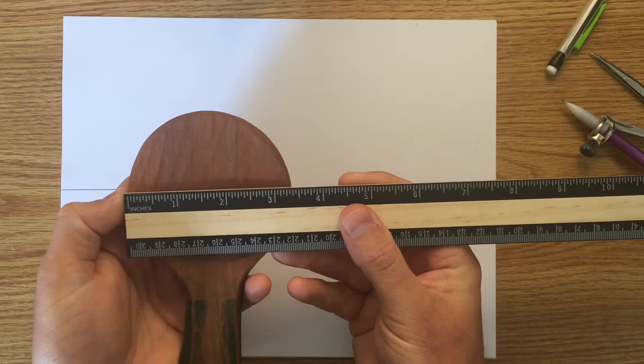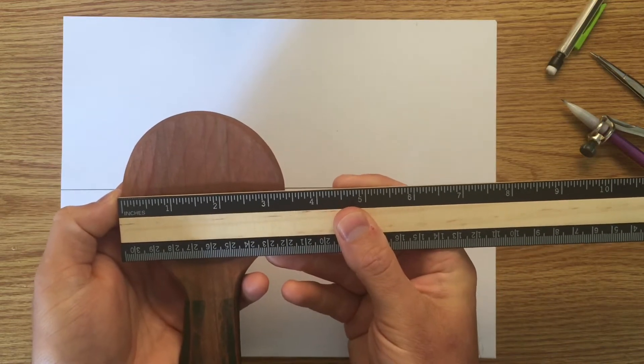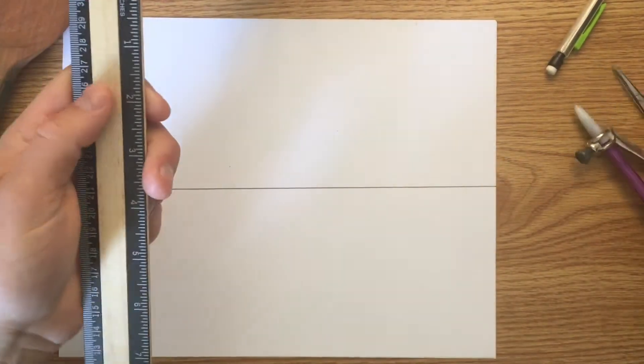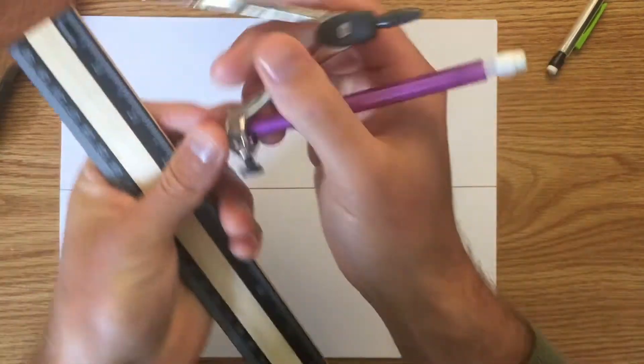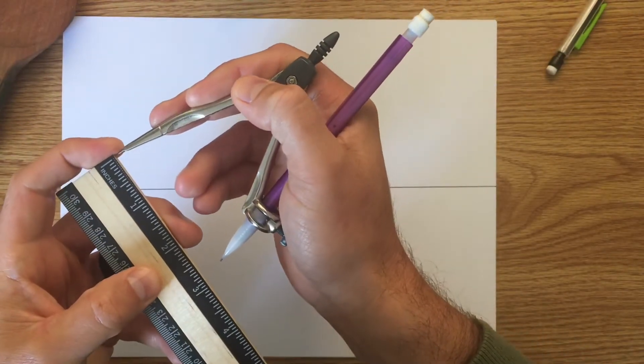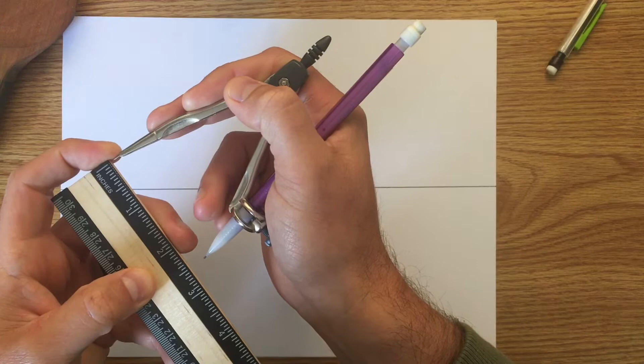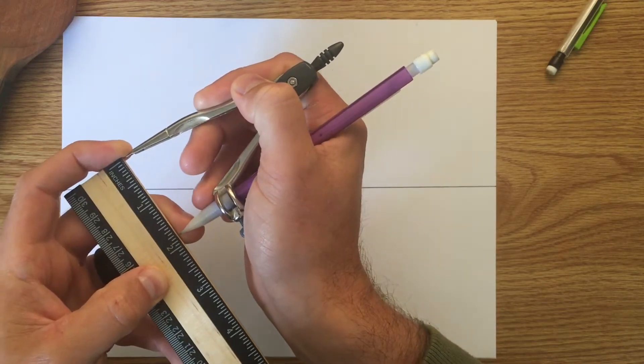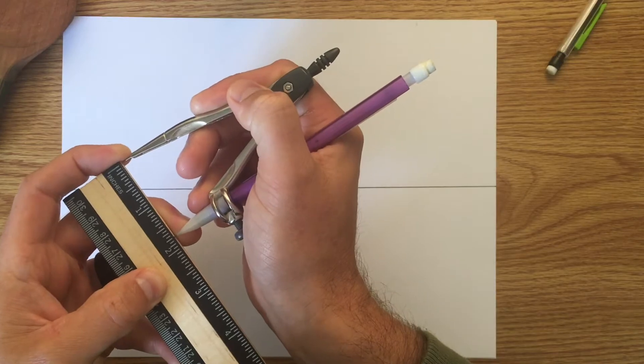So I'm going to look for just roughly the widest part. This is almost three and a half, and I'm actually going to make it three and a half because I'd like my next rice paddle to actually end up being a little bit bigger than that. So half of three and a half is 1.75.